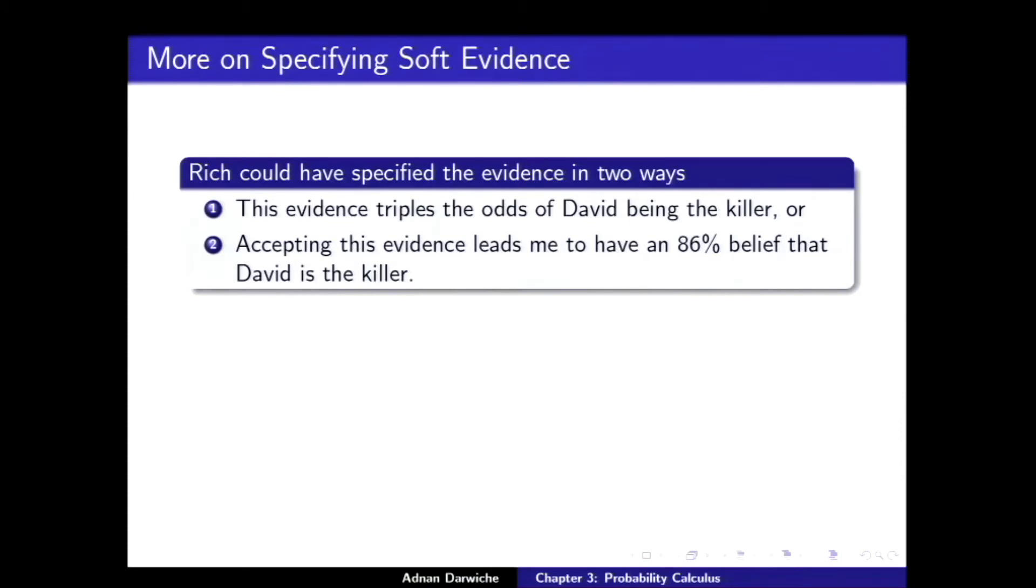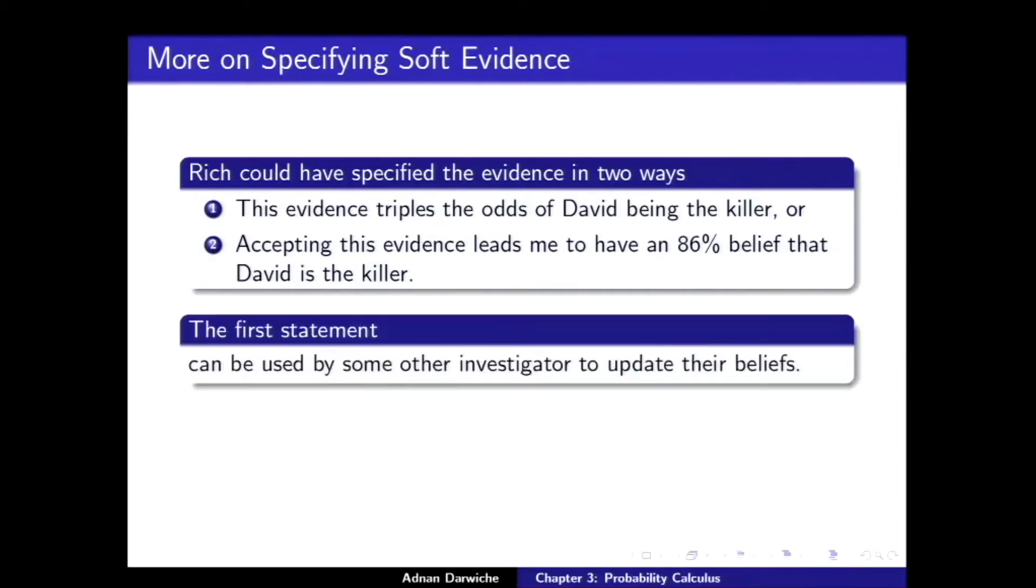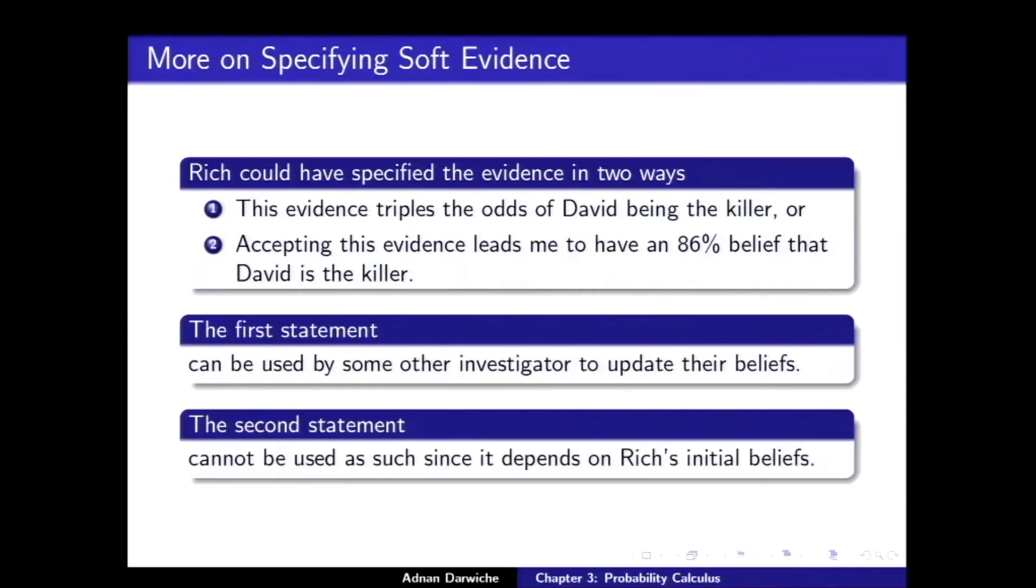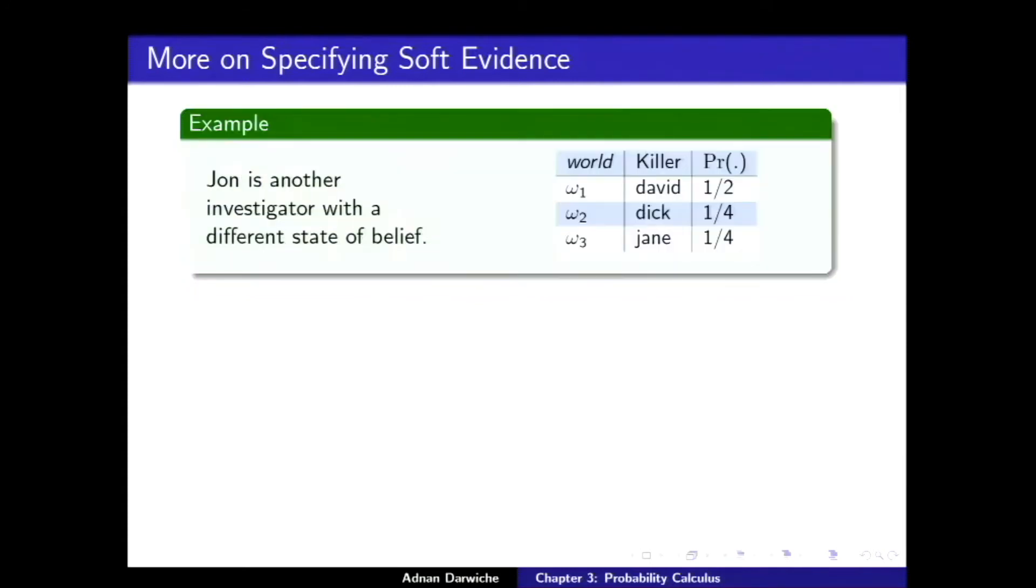The second statement is not just the result of the evidence. It's combining the evidence with prior beliefs. Now, what's the difference between these two statements? The difference is, the first statement can be used by some other investigator to update their beliefs. Rich can go to another and say, here's evidence that triples the odds of David being the killer. Use it. Use this quantity. The second statement cannot be used. Because it depends on Rich's initial beliefs.